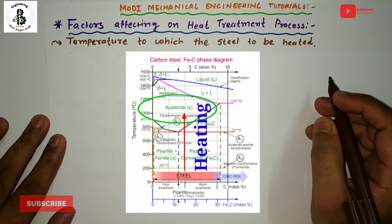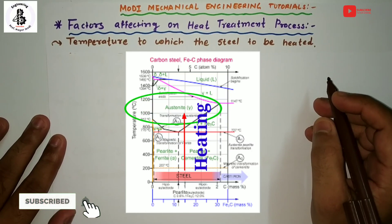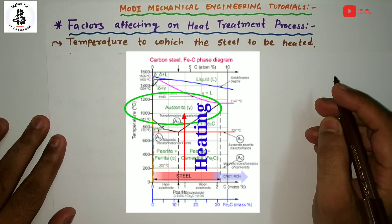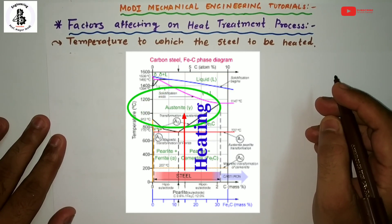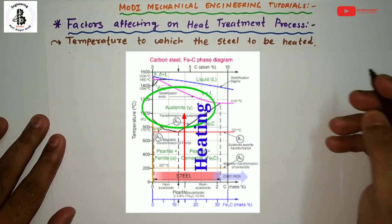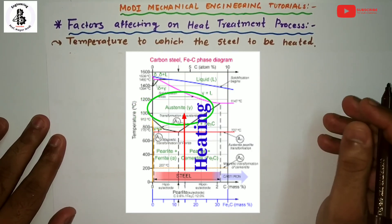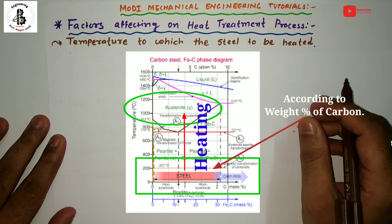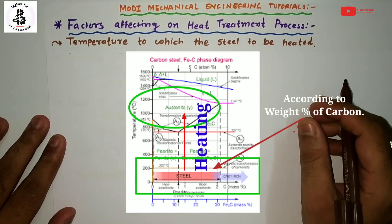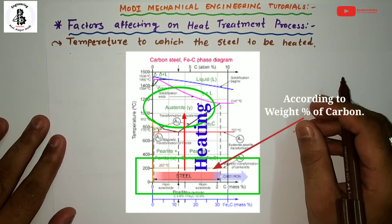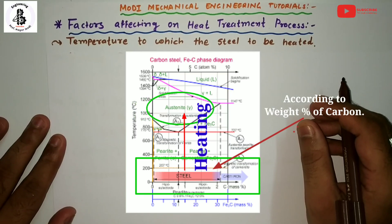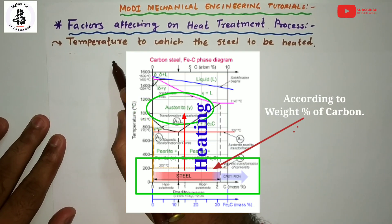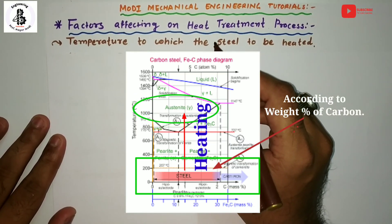If you want to perform any heat treatment process, it will be converting your room temperature steel to the austenitizing temperature range. According to the weight percentage of carbon, the category of hypo-eutectoid steel, eutectoid steel, and hyper-eutectoid steel will each have a different temperature range. That is one of the factors affecting the heating.